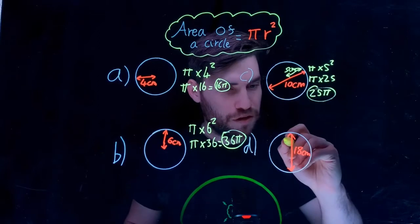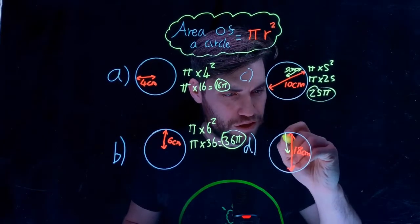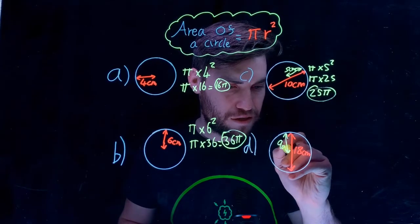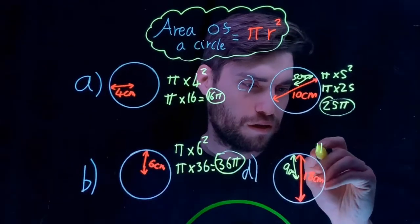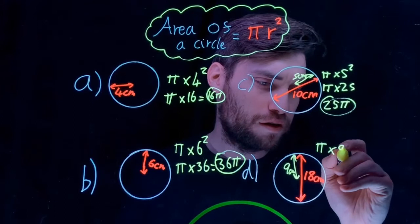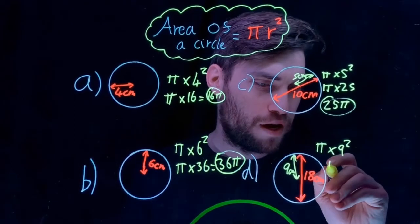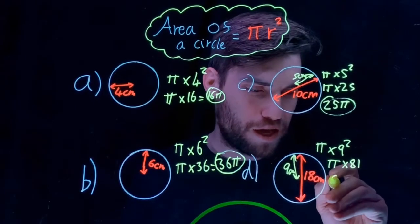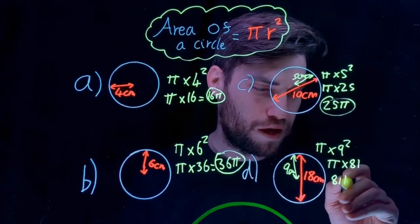Same again. We are given the diameter. So we have to halve it first to get the length of the radius. Half of 18 is 9 centimeters. Let's do π times 9 squared. It'll be π times 81. Our answer will be 81π.